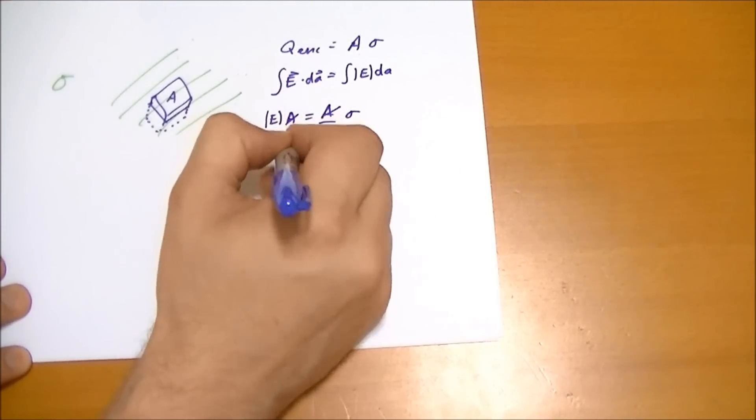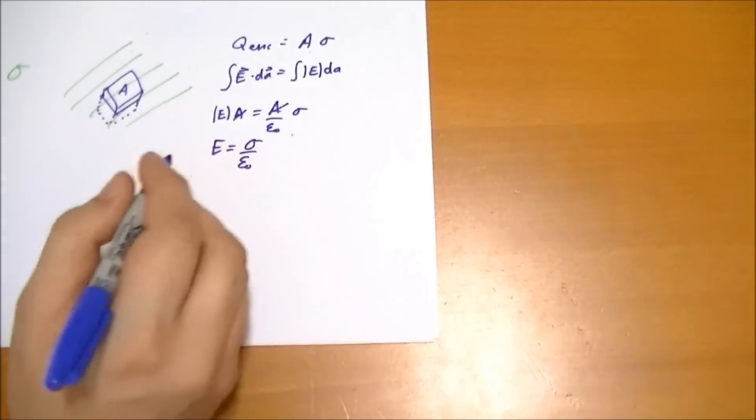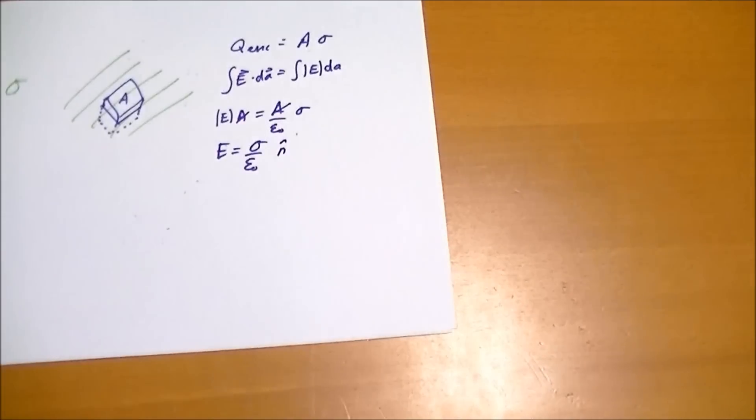And so the electric field is equal to sigma over epsilon naught, and it points in the normal direction from the surface.